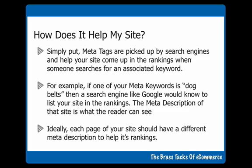Let me explain that very simply. If, for example, somebody is looking for 'dog belts' as their search engine keyword, and it is a keyword in your site because it's related to what your site is about, Google will be able to pick it up because it crawls your meta tags, it understands what's going on in your meta tags, and it will help list your site in the rankings.